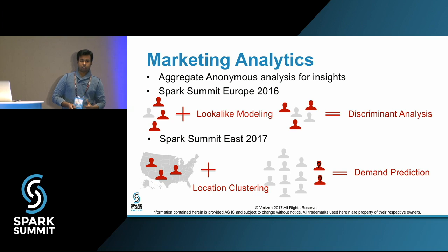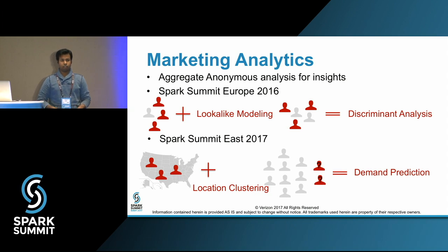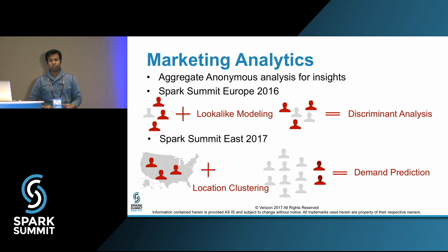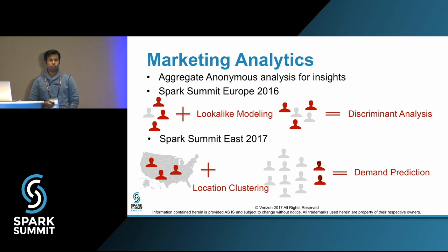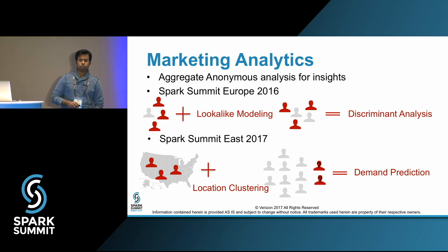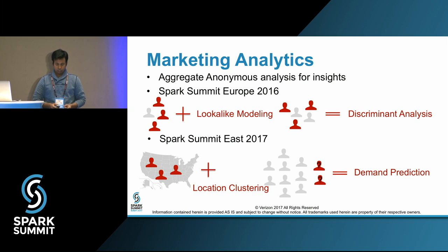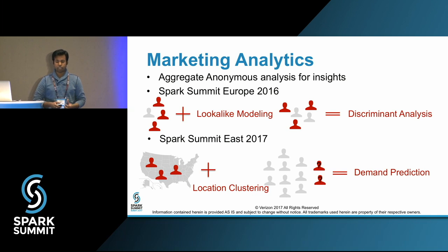The problem is a marketing analytics problem. We have to do aggregate anonymous analysis to generate insights. We are not supposed to go into any details of which subscriber is generating the data — it is completely aggregate anonymous. In Spark Summit Europe, we showed a lookalike model with linear discriminant analysis. In this talk, the focus is on how to group the locations of source IPs faster and then come up with a predictive model to predict the demand of audience groups.